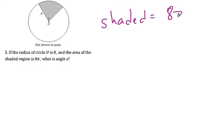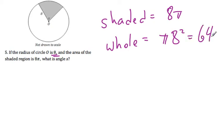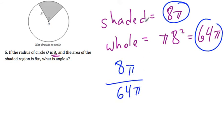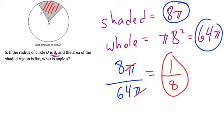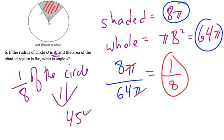For this one, we work backwards. If the area of the shaded region is 8 pi, and the area of the whole circle with radius 8 is pi times 8 squared equals 64 pi, then 8 pi over 64 pi reduces to one-eighth. So the shaded region is one-eighth of the circle. From the formula sheet, one-eighth of a circle corresponds to 45 degrees — a slice of pizza. So the angle must have been 45 degrees.